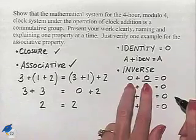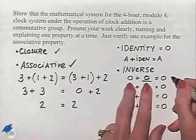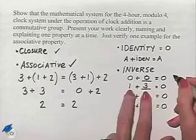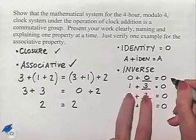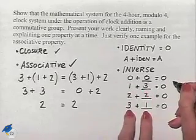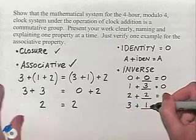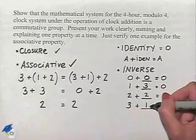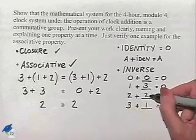Now, we don't have to worry about commutative property because we see that 0 is its own inverse. We can see that 1 plus 3 is 0, and that's the same as 3 plus 1. So, 1 is going to be the inverse of 3, and 3 is going to be the inverse of 1. And then 2 is its own inverse.